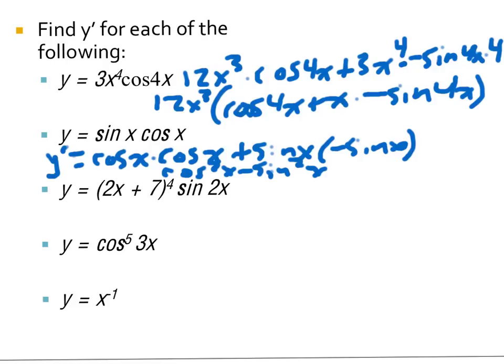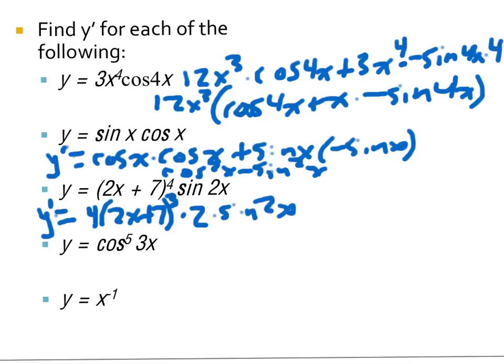The third problem is another product rule problem — a fairly complicated one. I'm going to derive the first using the chain rule: 4 times the inside function to the third power, times the derivative of the inside, so times 2, times the second function left alone — sine 2x. Plus, leave the first one alone, times cosine 2x, times 2. I'm not going to simplify it, but it could be simplified by looking for the common factor.